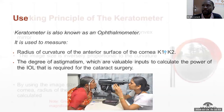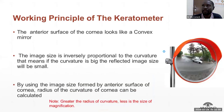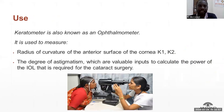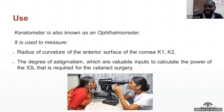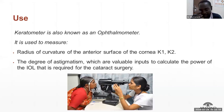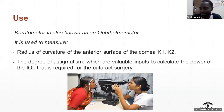K1 and K2 represent the meridians — the vertical meridian and horizontal meridian curvature of the anterior surface of the cornea. The readings obtained are used to determine the degree of astigmatism of the patient, as well as to calculate the IOL power during cataract surgery.